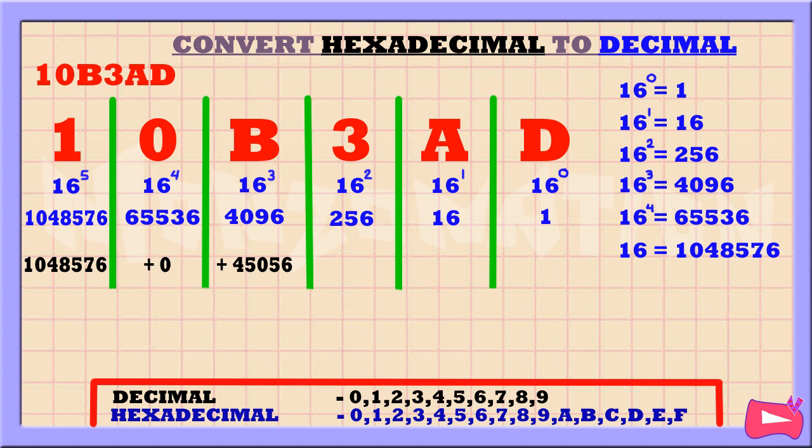3 times 256 is 768. A times 16 is 160. D times 1 is 13.